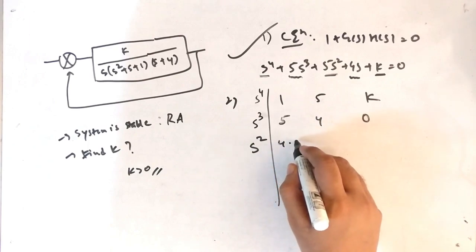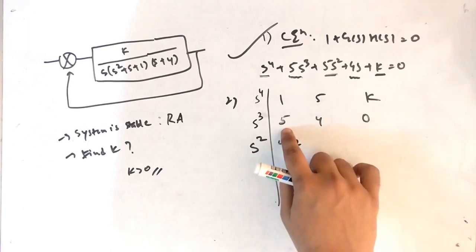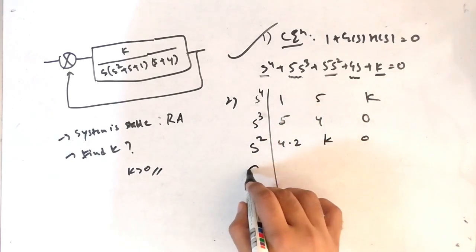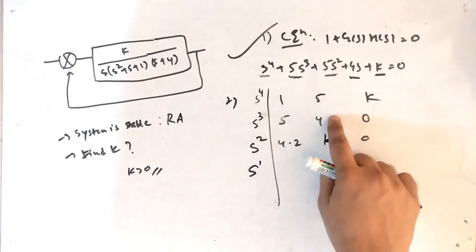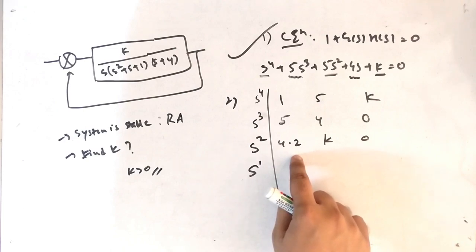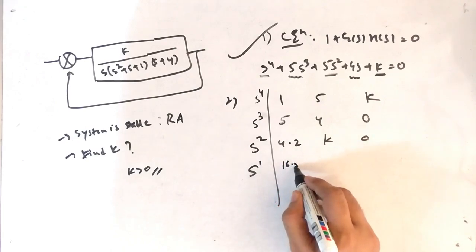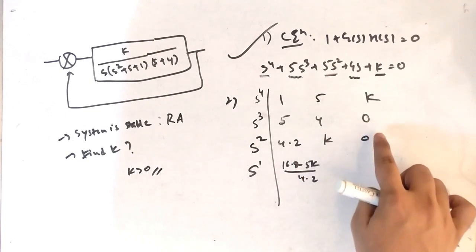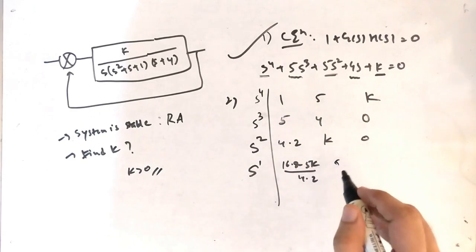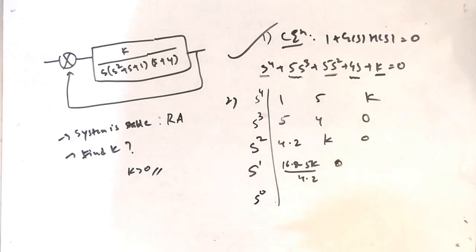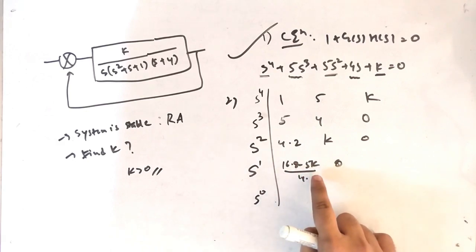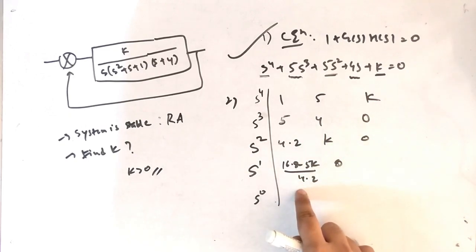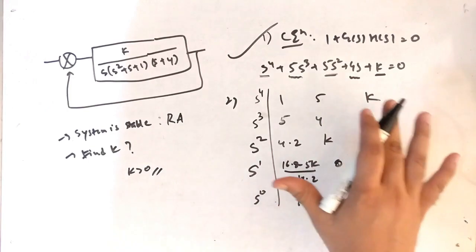That gives 4.2. To find the next term: (5×k − 0×1) / 5, giving k. Then the next term: (4.2×4 − k×5) / 4.2, which gives (16.8 − 5k) / 4.2. The last term in the array is 0, and the s⁰ row entry is computed as ((16.8−5k)/4.2 × k − 0 × 4.2) / ((16.8−5k)/4.2), giving k.